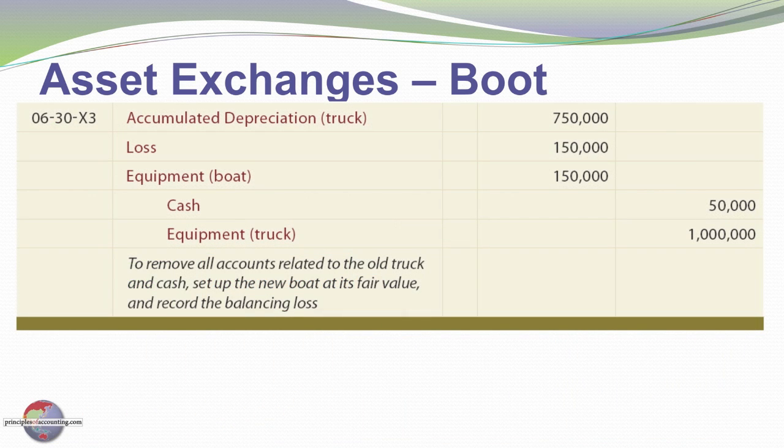Here's the journal entry for the boot example. We take the old truck off the books: credit equipment $1 million, debit accumulated depreciation $750,000. We also credit the cash being given of $50,000 — so there's our $300,000 coming out of the general ledger. We debit the new boat at $150,000, and we need a debit or loss of $150,000 to balance out the entry.